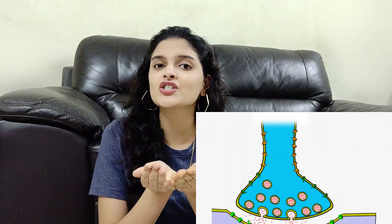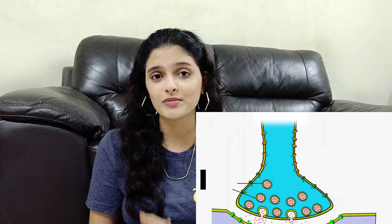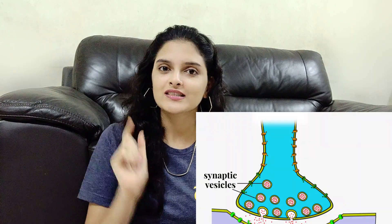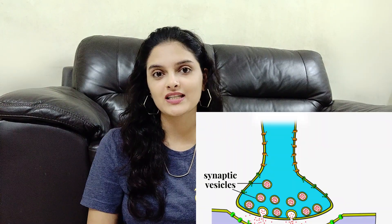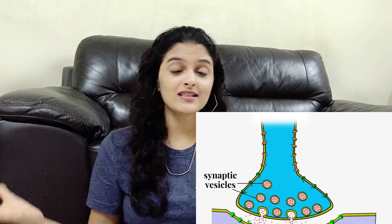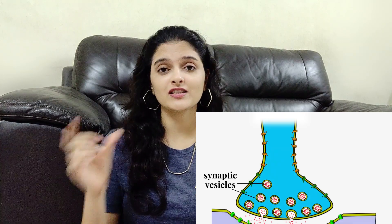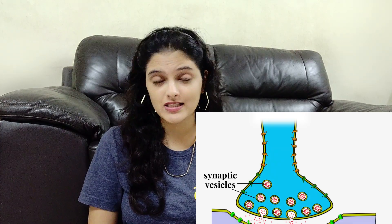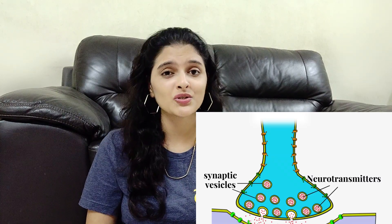This synaptic terminal has a number of sac-like structures called synaptic vesicles. These synaptic vesicles are filled with a fluid and a chemical substance called a neurotransmitter.